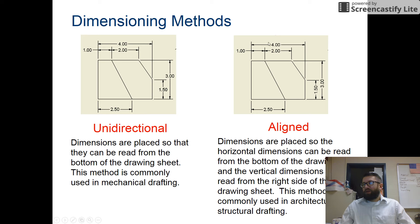Aligned dimensions. If the dimension is horizontal, the numbers appear horizontal. If the dimension is vertical, the lines appear vertical.